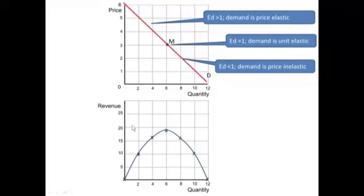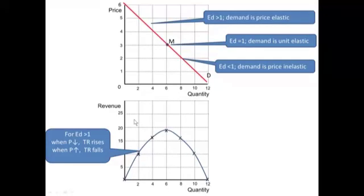When the price goes down then total revenue rises. Slope goes up.